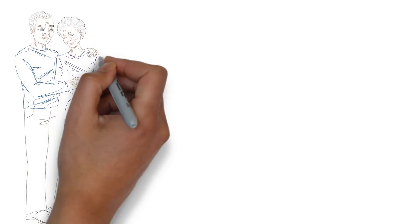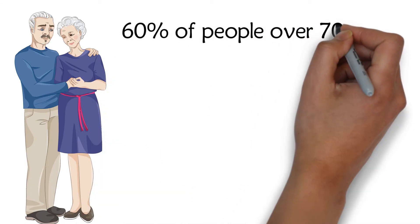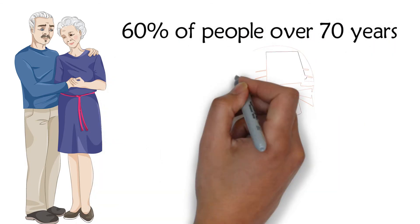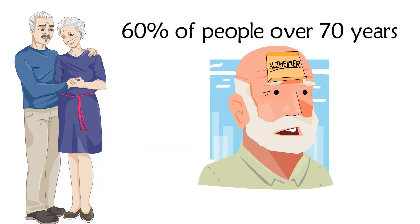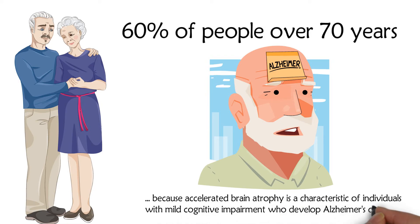16% of people over 70 years old have mild cognitive impairment. Half of these people develop Alzheimer's disease because accelerated brain atrophy is a characteristic of individuals with mild cognitive impairment who develop Alzheimer's disease.